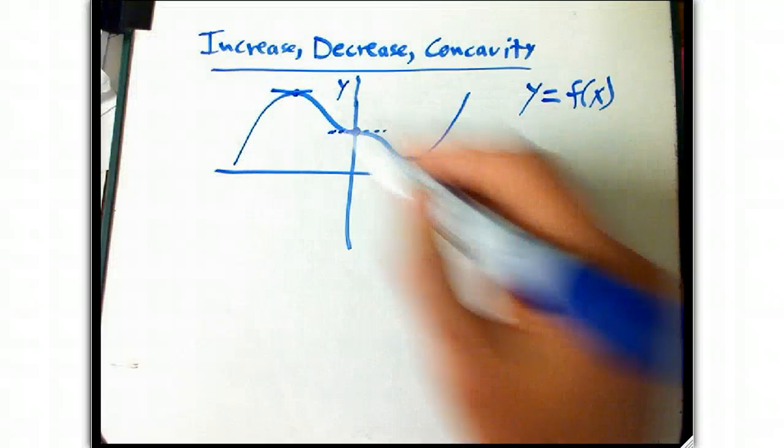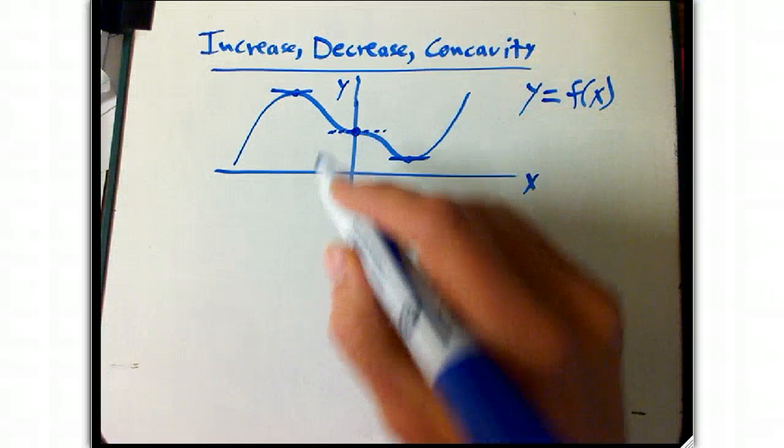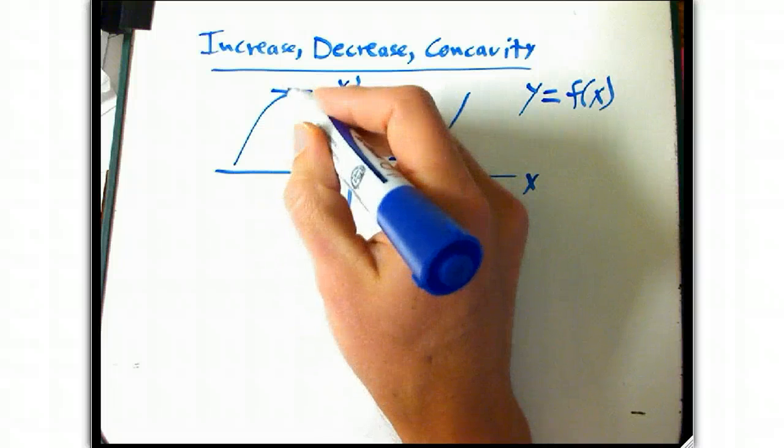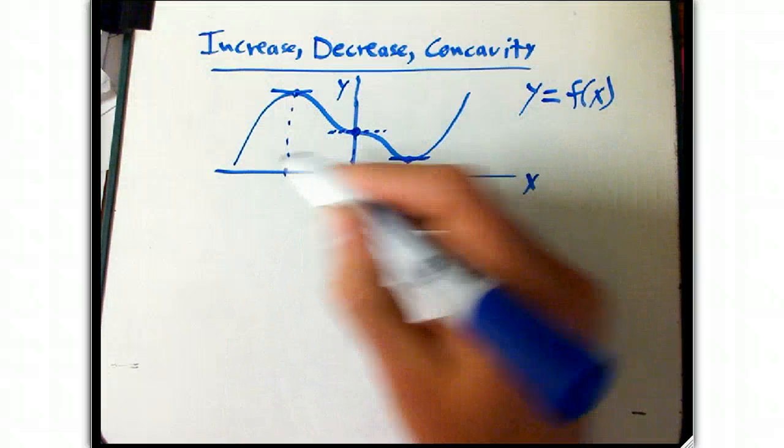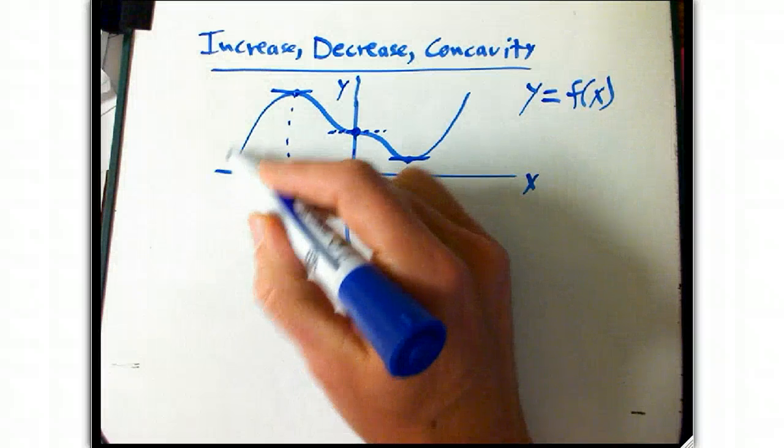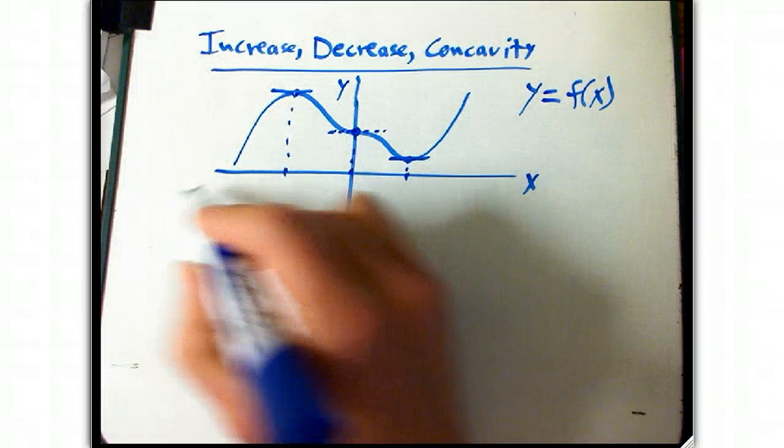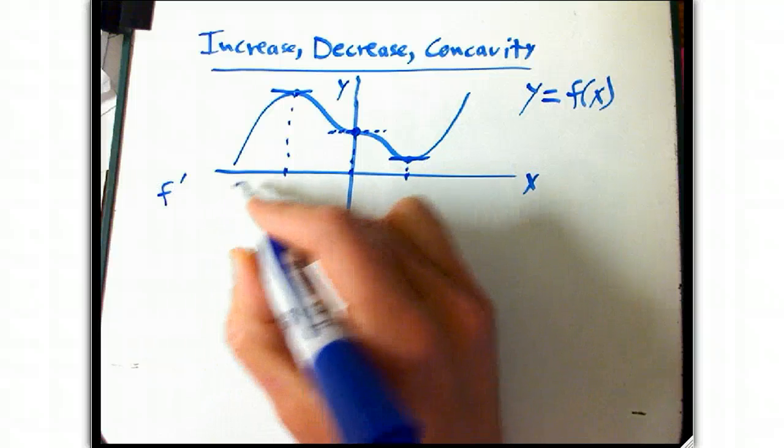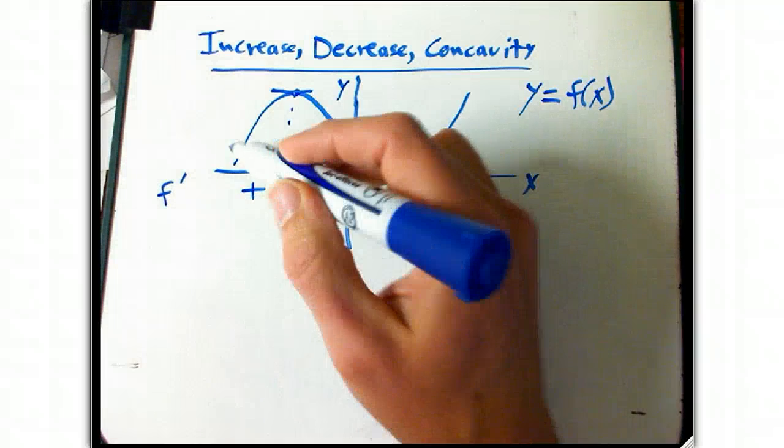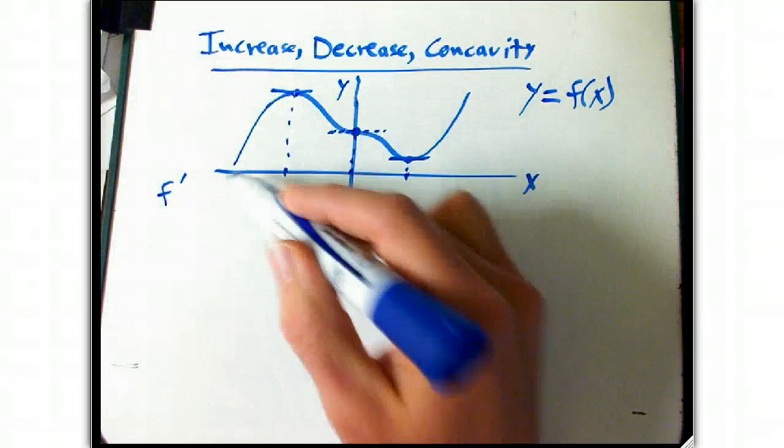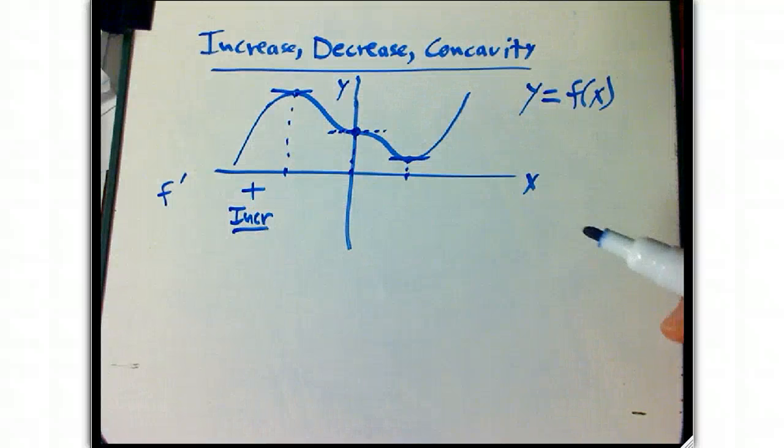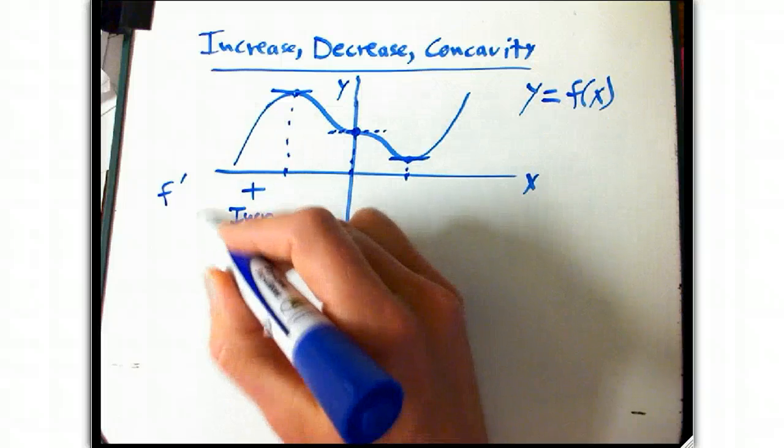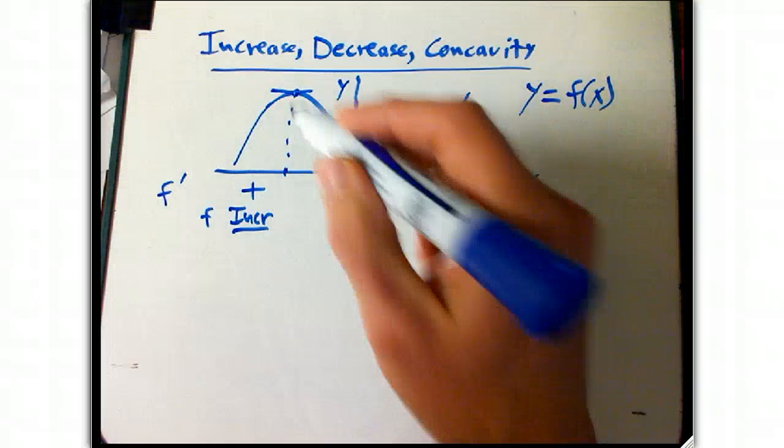Now what about in between? What's going on in between? In this region, let me draw the x values here. Those are the critical numbers, these x values. Right in here, the first derivative is positive because the slope is positive, and that's where the function is increasing. And that's one of the simplest links here. When f is increasing, the first derivative is positive. We pretty much already knew that.